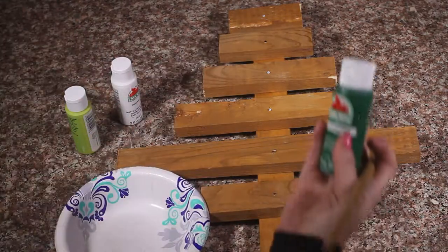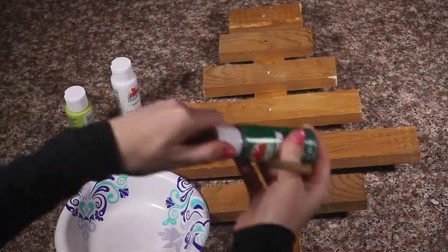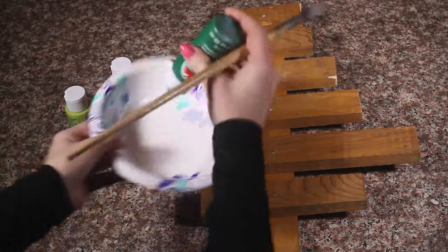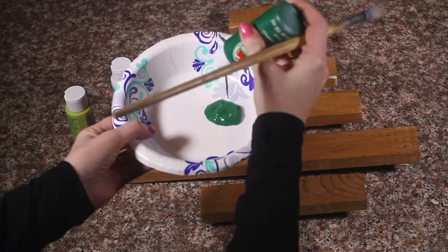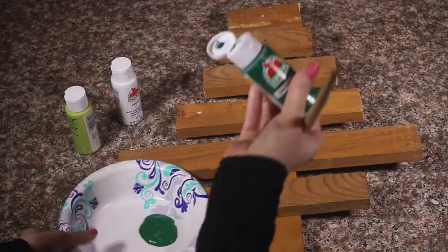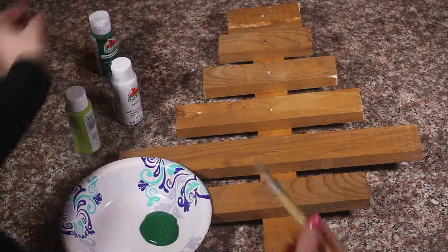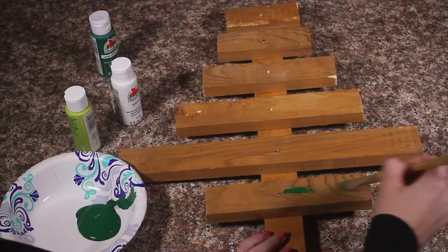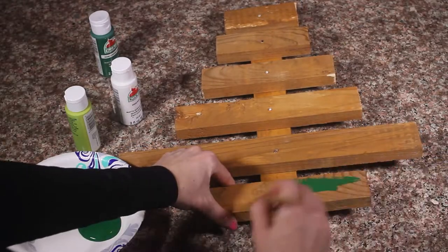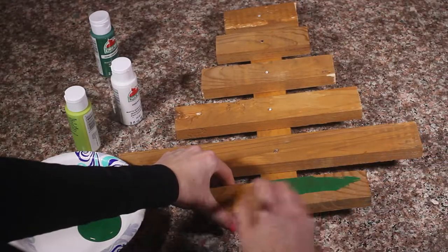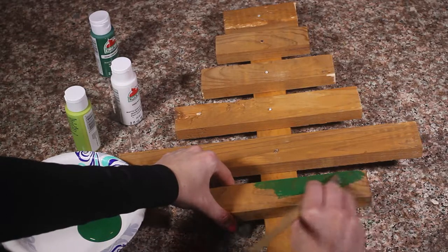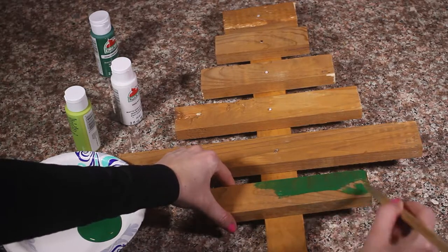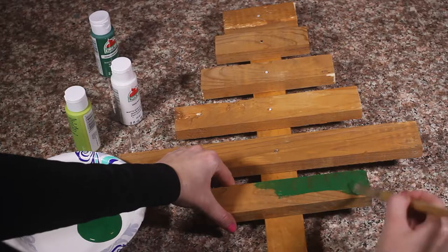So I'm going to take my darkest green and I'm going to squirt that in my bowl. And that is going to be my bottom layer of my tree. I'm just going to paint that. Now I'm just going to lightly paint this because I kind of want that wood grain to come through. So it's almost like a stain.